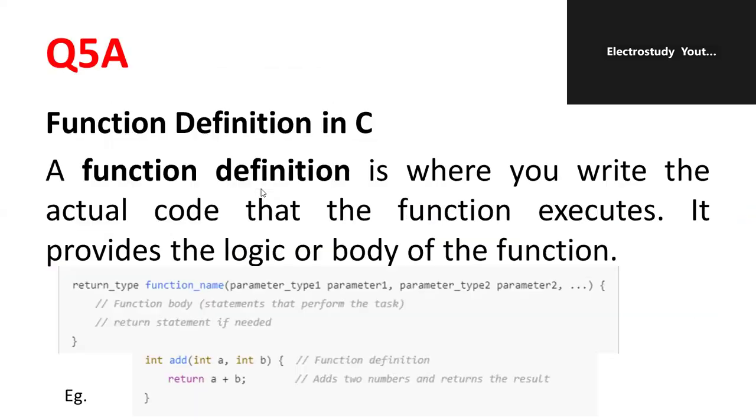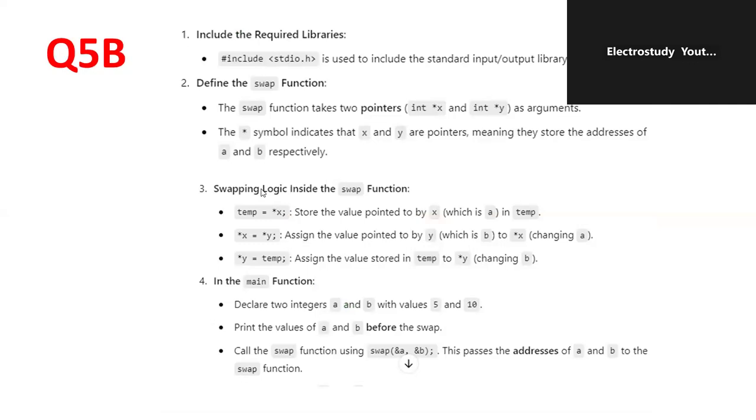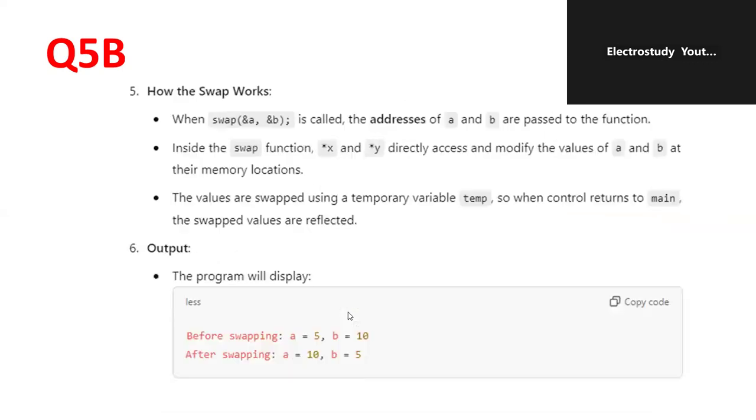You can see the logic also. Individual explanation. Include the required libraries. Hashed include stdio.h. Main library. Then, define the swap function. Swapping logic inside the swap function in this particular manner. Then, in the main function, you can declare the variable. Then, you can verify before swapping and after the swapping.